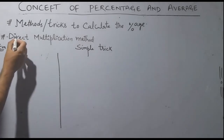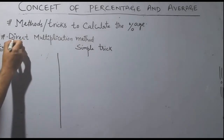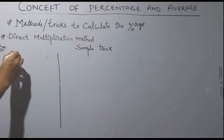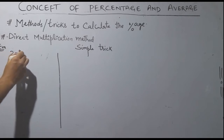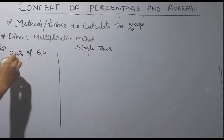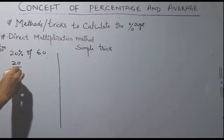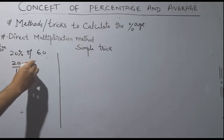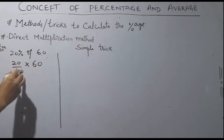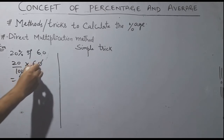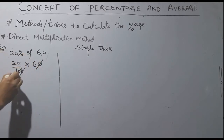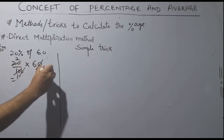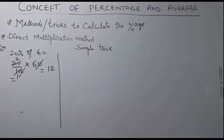The first method is the direct multiplication method. For example, if I ask 20% of 60: 20% means 20 divided by 100, then multiply by 60. The zeros cancel, leaving 2 into 6, which gives 12.